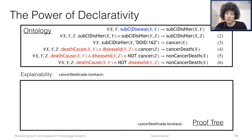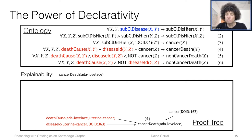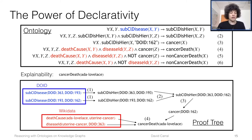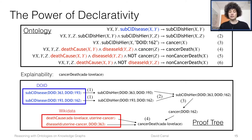A proof is represented as a tree. I have the fact, and I can ask where it comes from — it comes from these three facts. Two were in Wikidata, and one was logically inferred during the reasoning process via rule number four. Rule number four tells me that if X was caused by Y, Y is a disease ID, and that disease is a type of cancer, then this is a cancer-related death. I can pull backward and know exactly how each fact was produced — this is really helpful for debugging. If something was a mistake, you can easily see it through this proof trace, which is especially useful in medical domains.